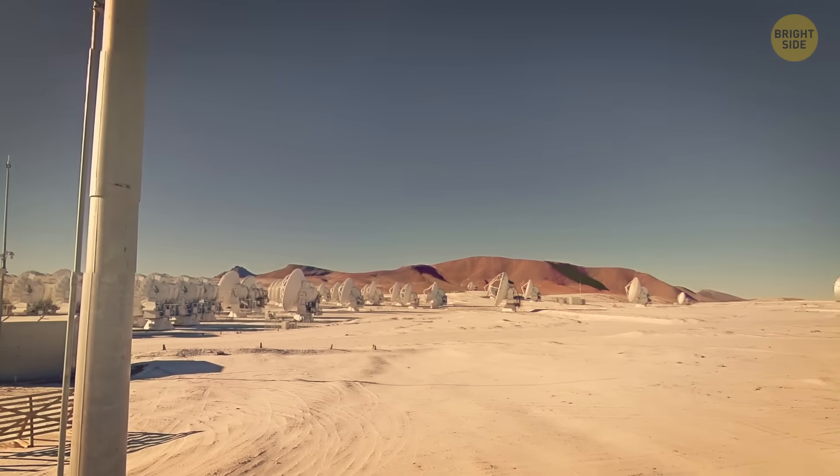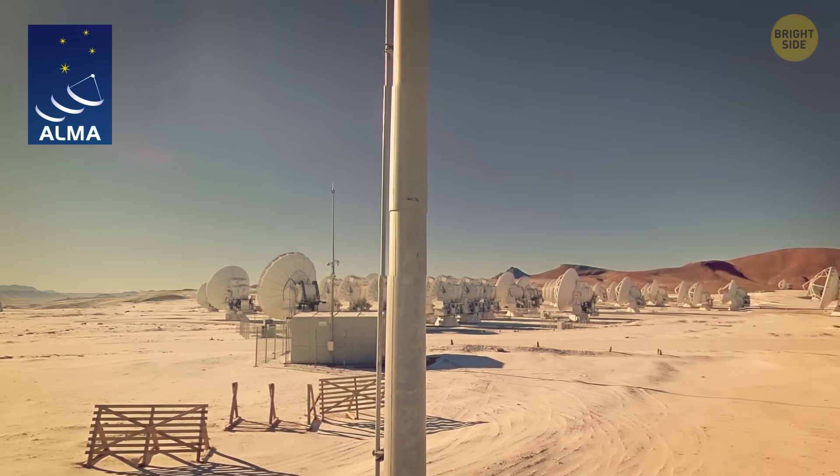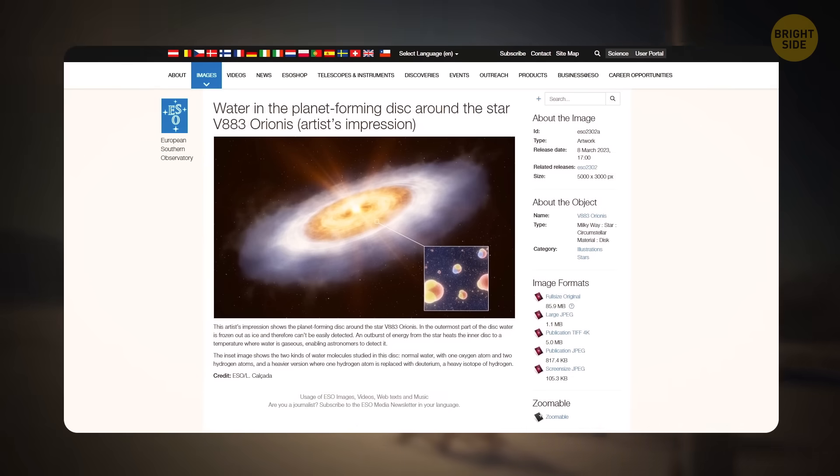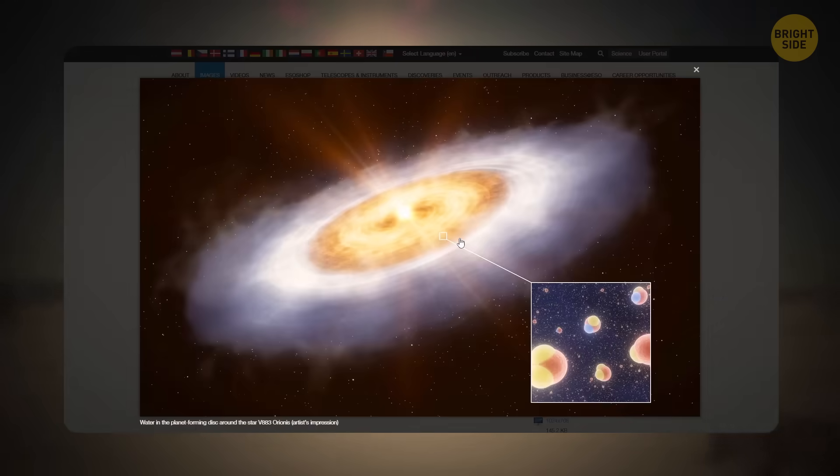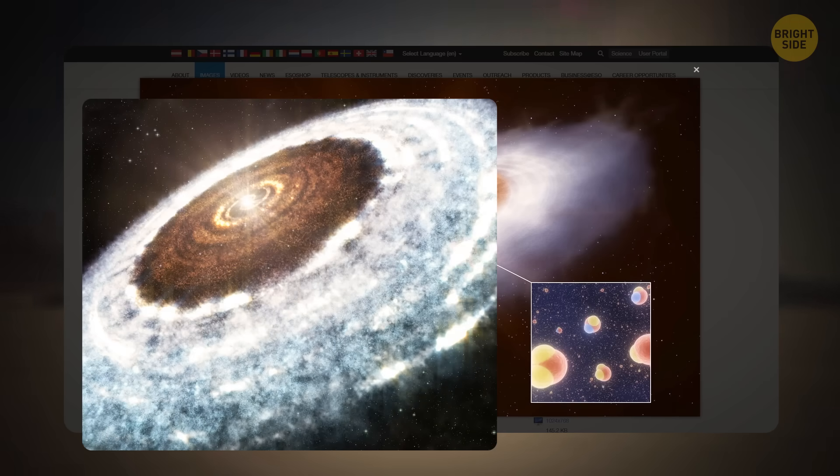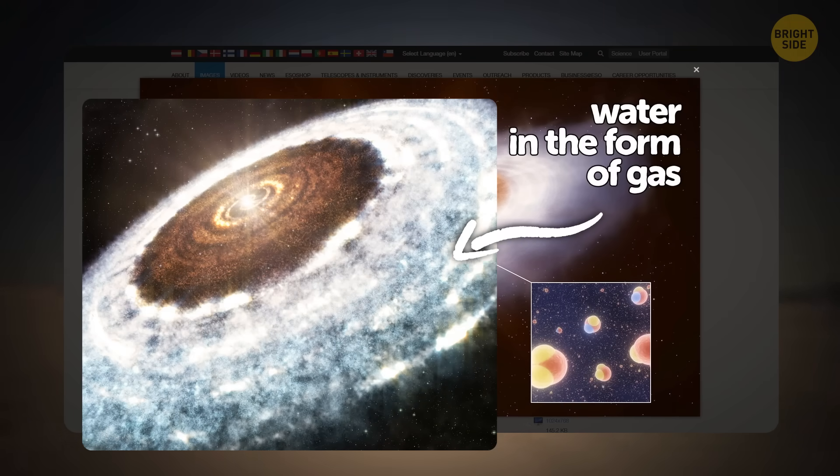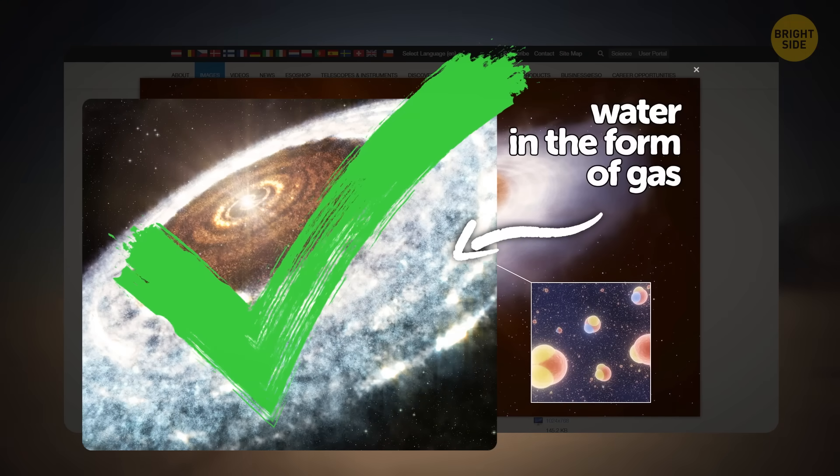To make sure they were right, they used a super powerful radio telescope called ALMA to look at V883 Orionis. And guess what they found? They detected water in the form of gas in that system. So the idea turned out to be correct.